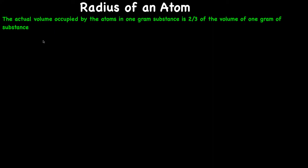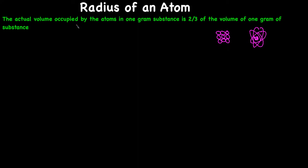In this video we will learn how to find the radius of an atom, and we're going to use Avogadro's method. According to Avogadro's hypothesis, the actual volume occupied by the atoms in one gram of a substance is two-thirds of the volume of one gram of that substance. That means there is some empty space — even within an atom, electrons revolve around the nucleus and there is empty space inside.